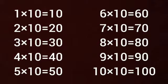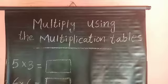Multiplication table of 10: 1×10 is 10, 2×10s are 20, 3×10s are 30, 4×10s are 40, 5×10s are 50, 6×10s are 60, 7×10s are 70, 8×10s are 80, 9×10s are 90, 10×10s are 100.